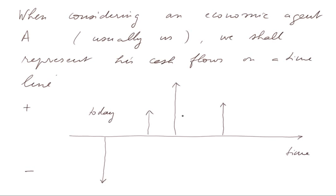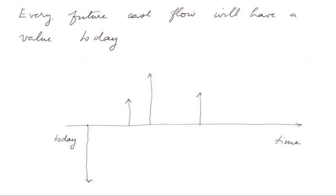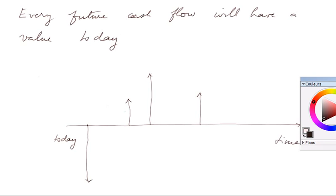Since I talked about the value today, let's represent more precisely these values today. Every future cash flow will have a value today, and I will often represent it this way. Suppose this date is today, and these are future cash flows that we expect. Today, we have spent some money. These cash flows will have a value today that we shall compute and compare to the expenditures we made today, if those were made in order to create these cash flows.